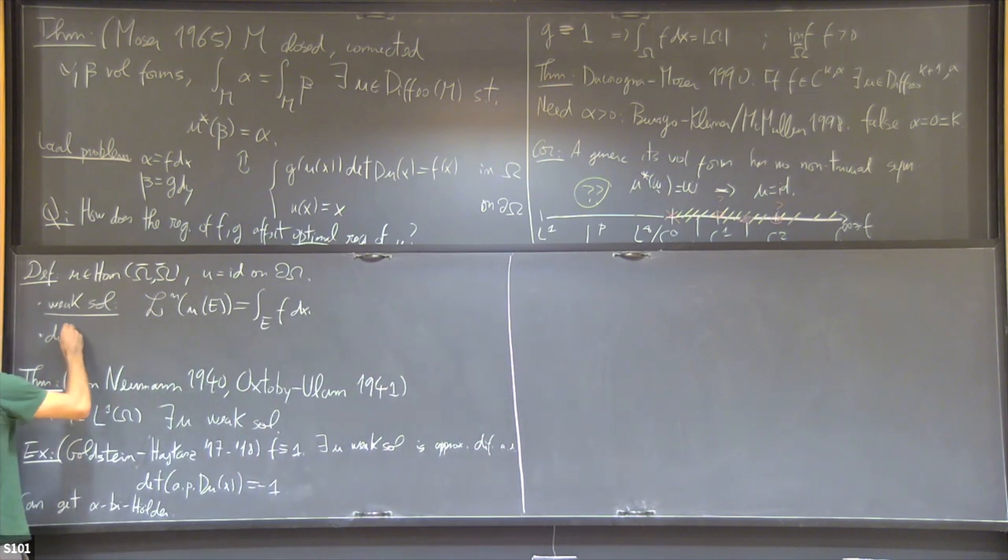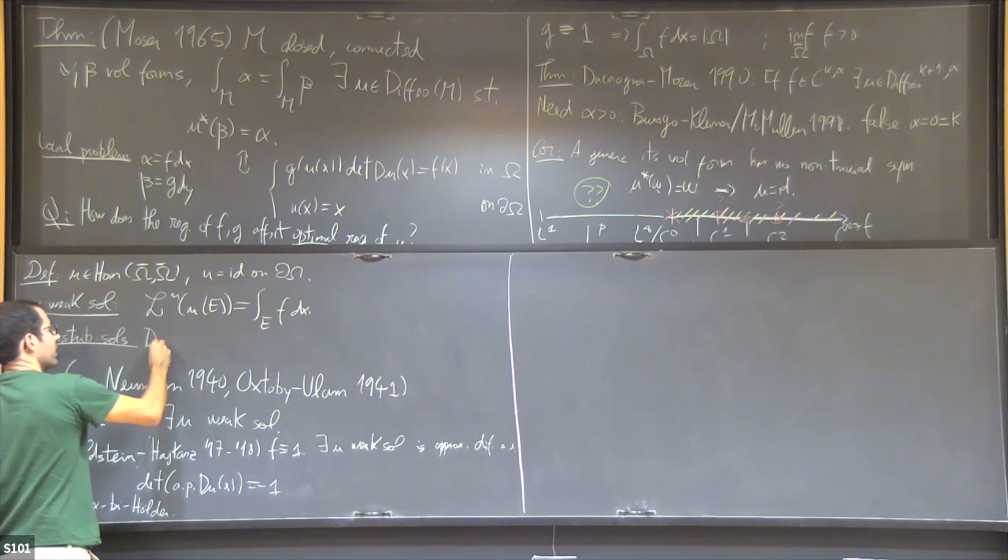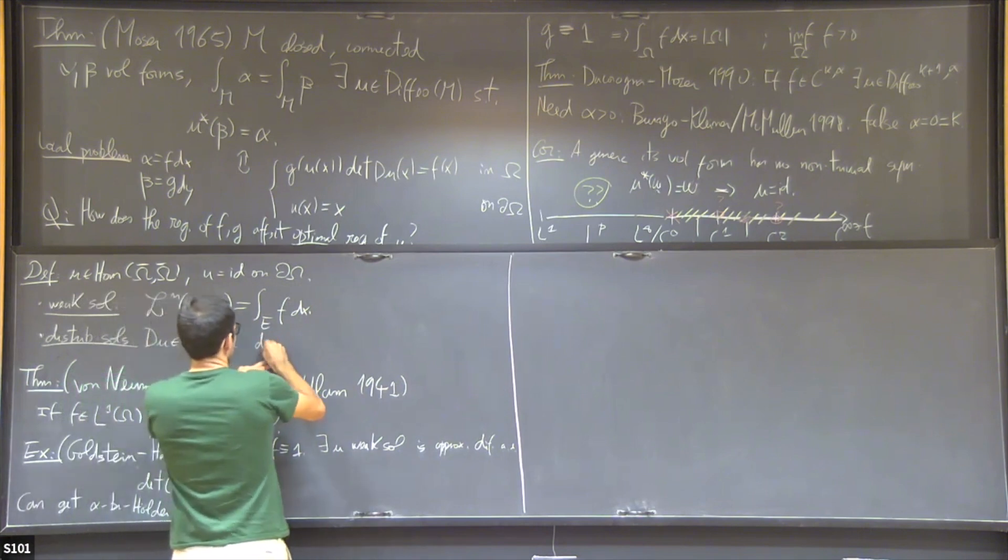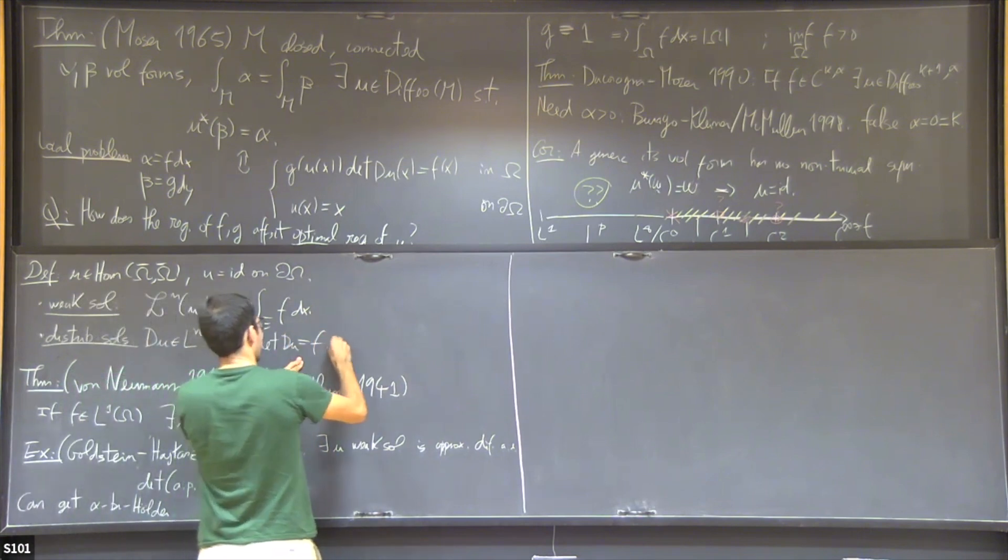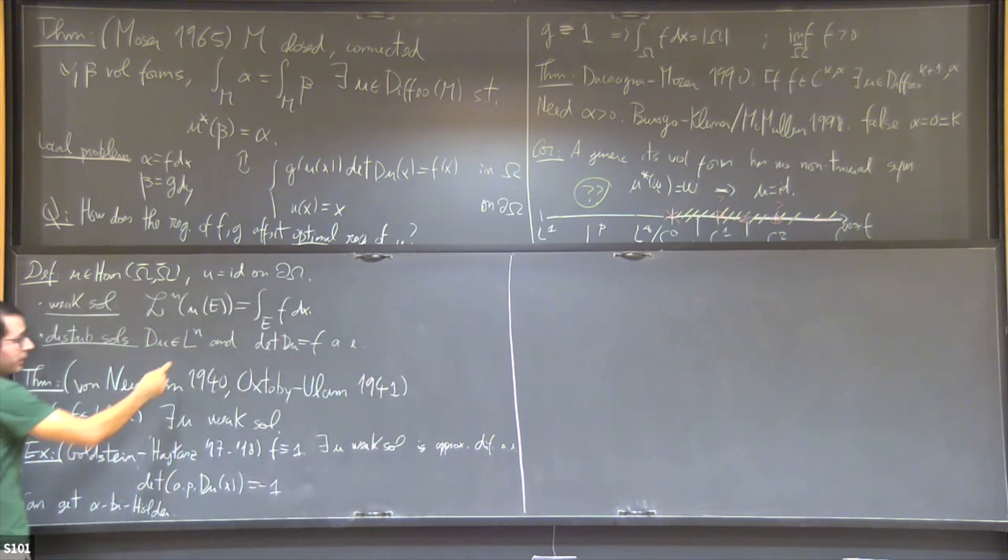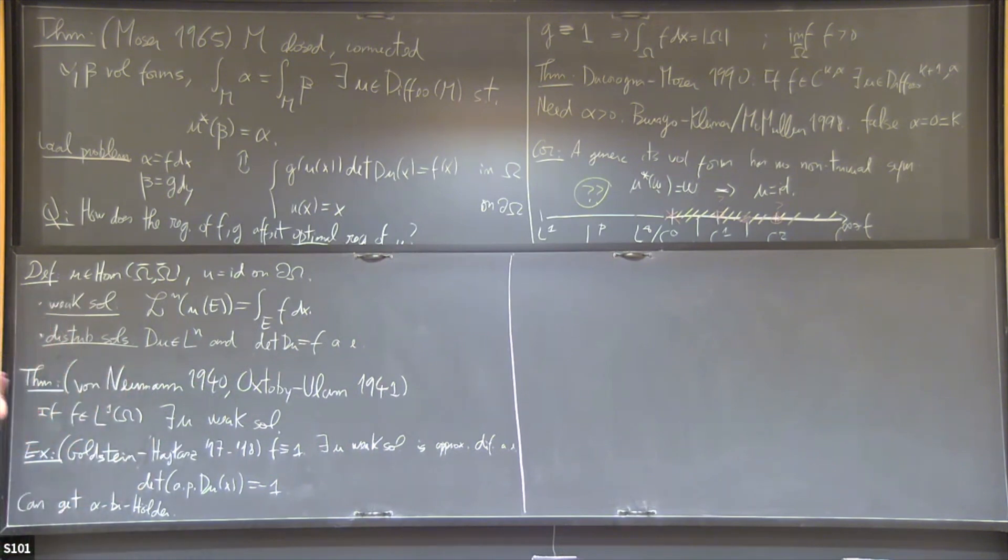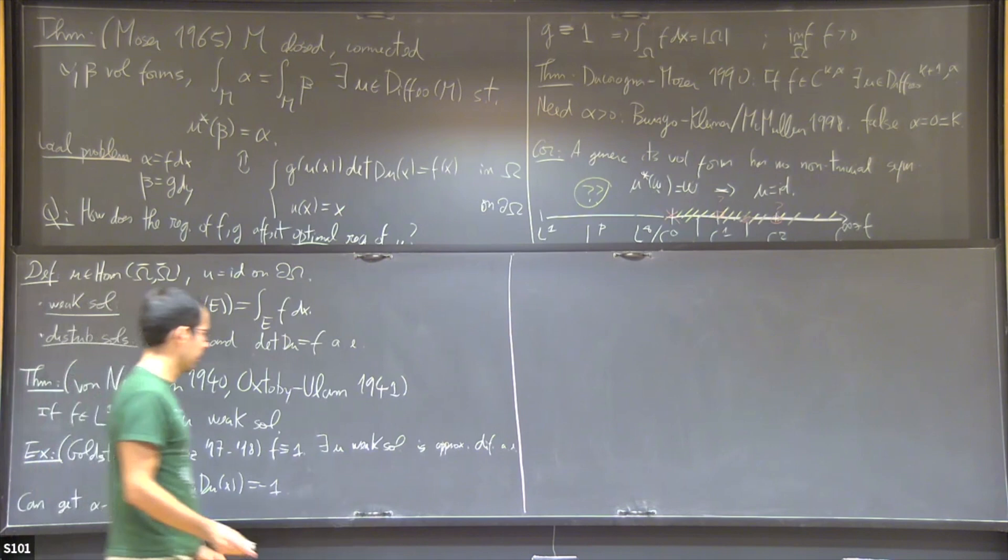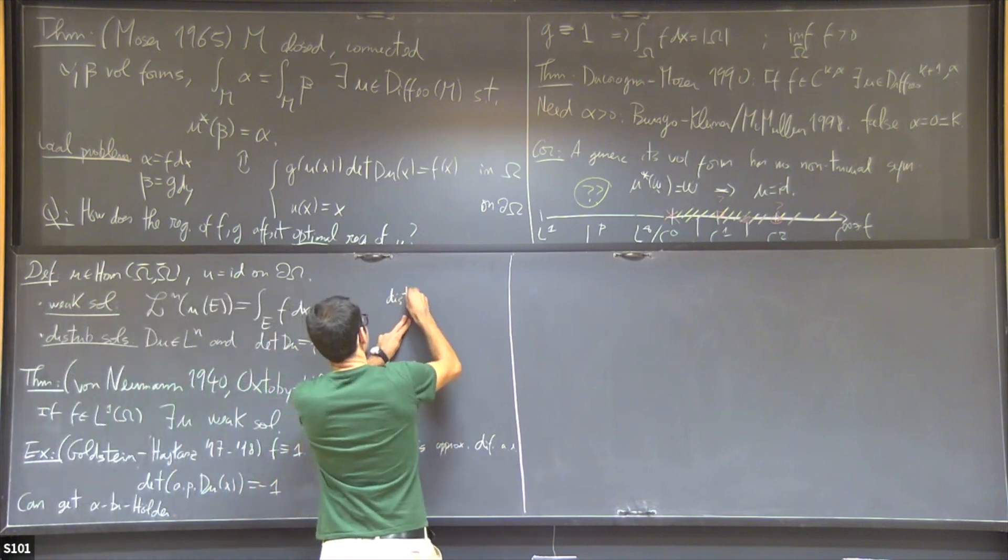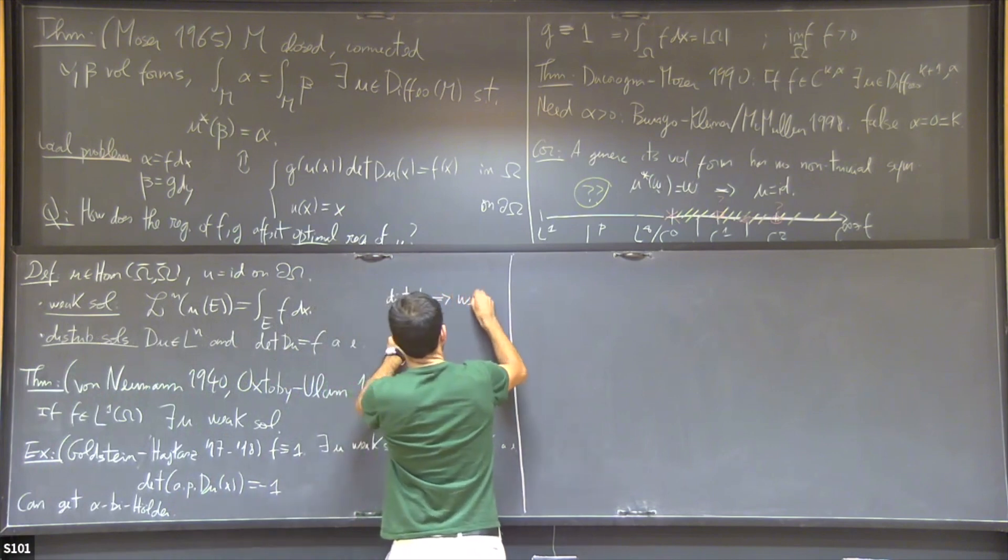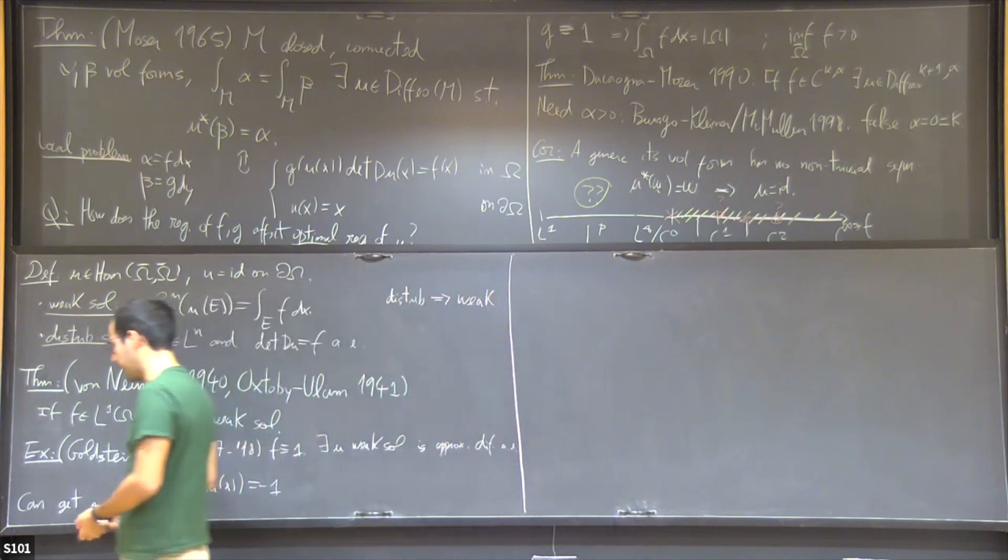This is what I said, in low regularity, there are many solutions, in particular solutions like these ones. For these solutions, clearly the PDE and the kind of measure formulation of our problem are different. Now I like PDE, so I want to look at the proper PDE. For that, we should look at a different notion of solutions. This is what I will call distributional solutions. The distributional solution is just a map U, which will satisfy DU is in L^n, and the determinant of DU is equal to f almost everywhere.